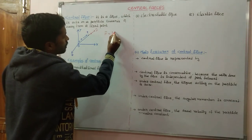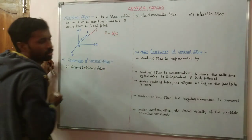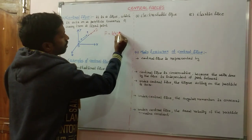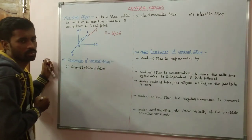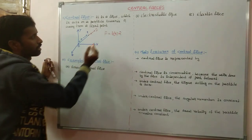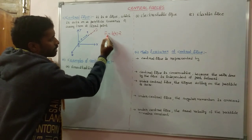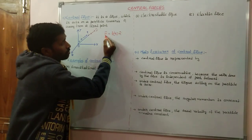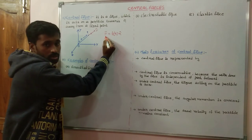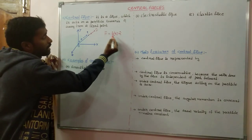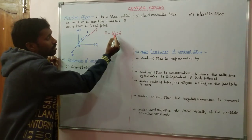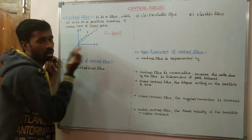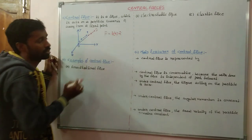The magnitude of central force depends upon function of r, and in the direction of r. Central force is mathematically represented by F bar equal to f(r) into r-cap. Here F bar represents the central force, f(r) is the magnitude of central force as a function of r, and r-cap is the direction of central force.